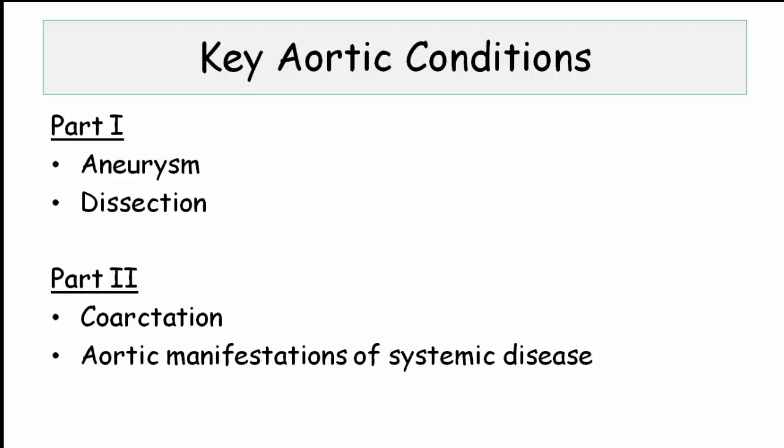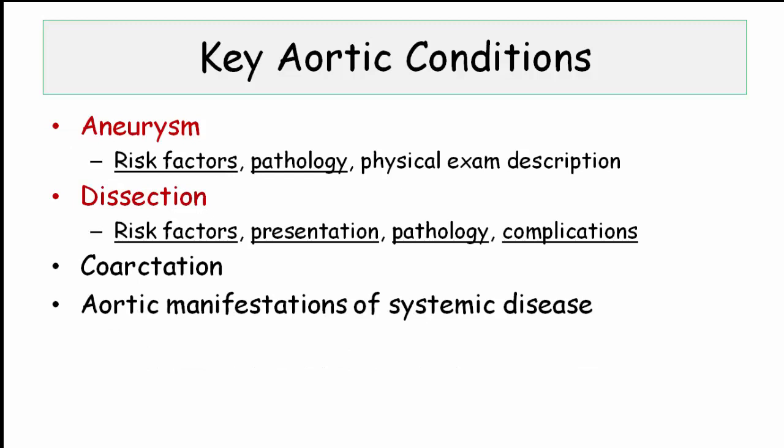In this first video, we'll cover aneurysm and dissection. In part two, we'll cover the key components of coarctation and aortitis. In reviewing aneurysm, the key focus will be on risk factors and pathology. Dissection gets a little bit dicier, with key features that include risk factors, clinical presentation, underlying pathology, and a boatload of complications.